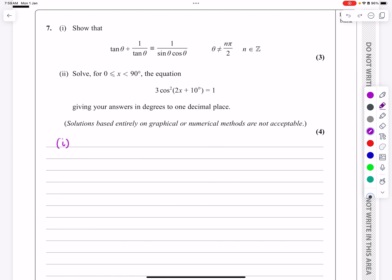Looking at this particular one, we can make a start on it. We know that tan θ is equal to sin θ over cos θ. That's one of the two identities we know. I'm going to start with the left-hand side and make it equal to the right-hand side.